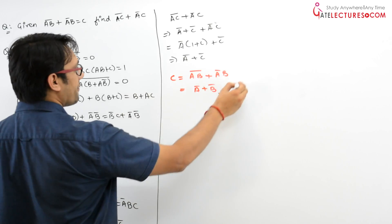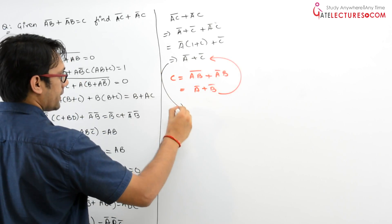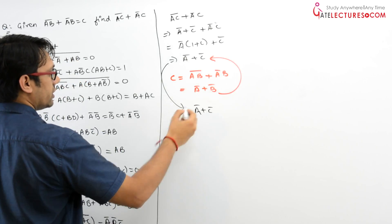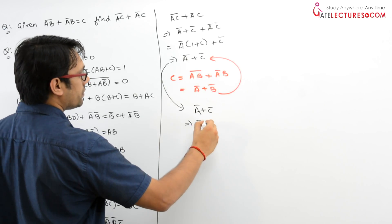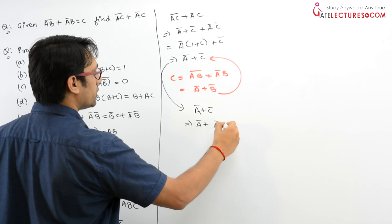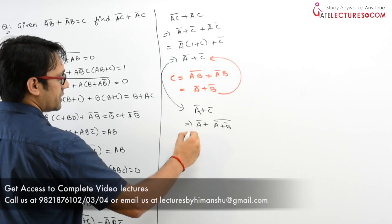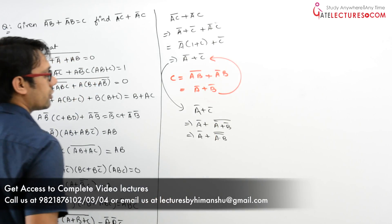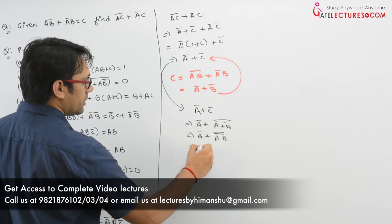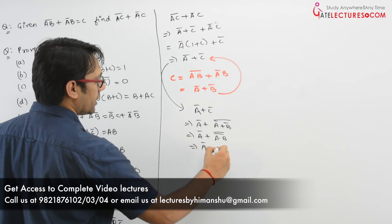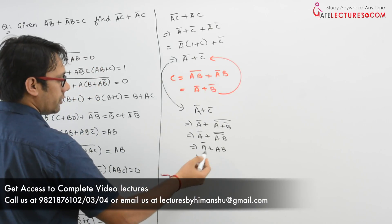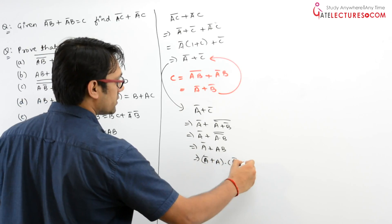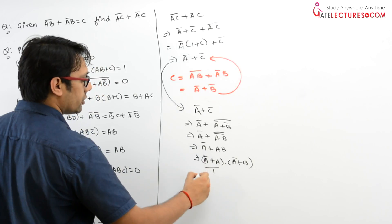Put these values into the above equation. It is A complement plus C complement. Put the value of C here, so it is A complement plus (A complement plus B complement) whole complement, which can be written as A complement plus (A dot B) whole complement complement, giving A complement plus AB. Distributing A complement: A complement plus A dot A complement plus B, and A dot A complement equals 0, so this simplifies.